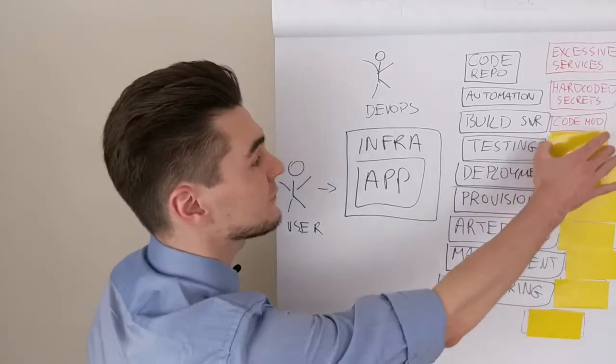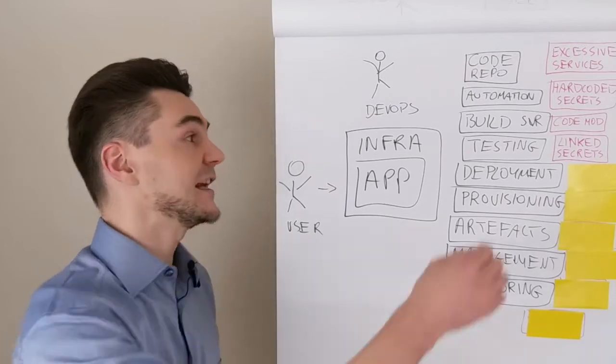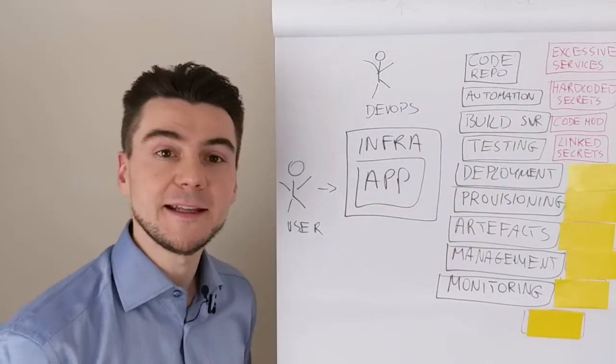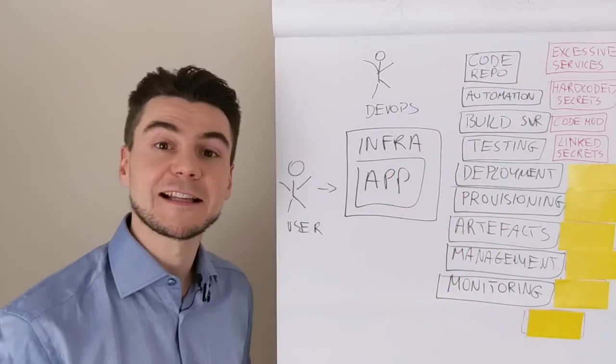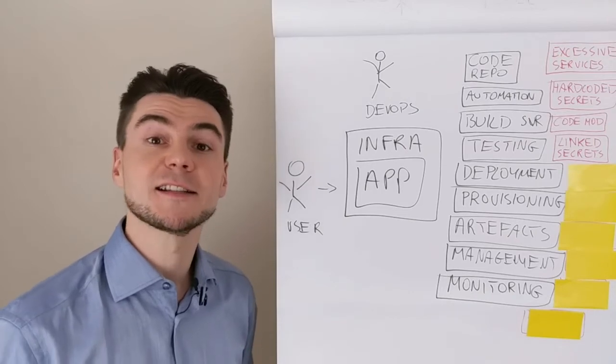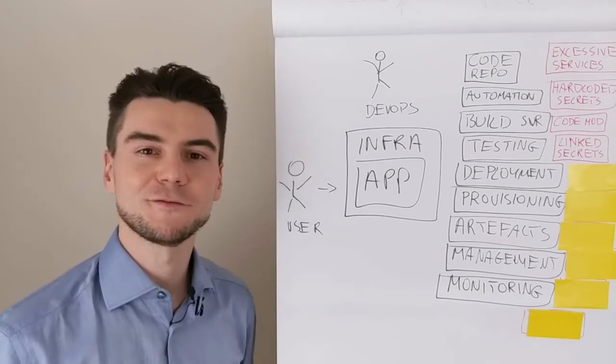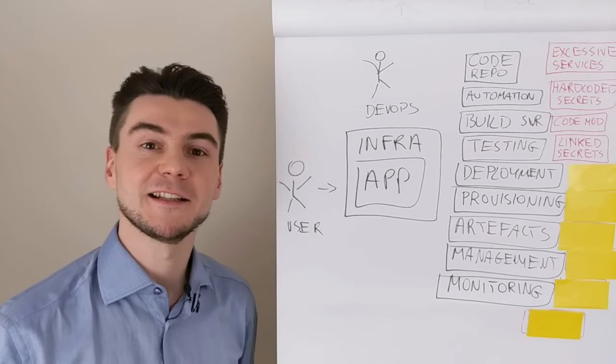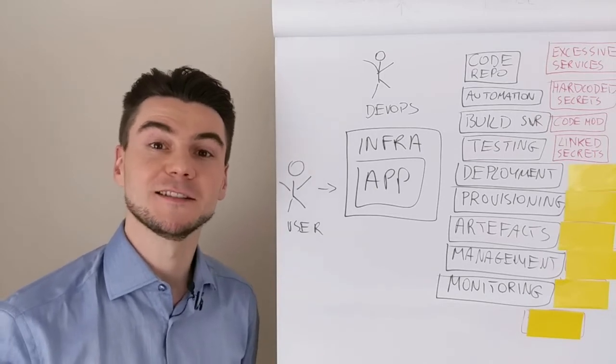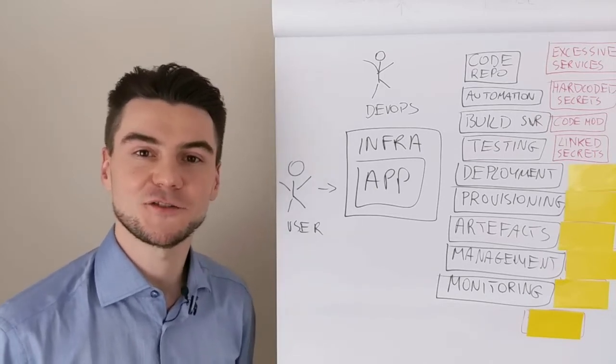Secrets stored in the configuration. In order for Jenkins to pull the code from GitHub, it needs to have the git SSH key configured somewhere and it is possible to retrieve those. I remember one Jenkins containing an AWS key that happened to grant administrative access in the whole infrastructure.